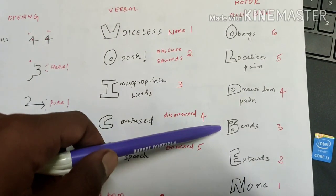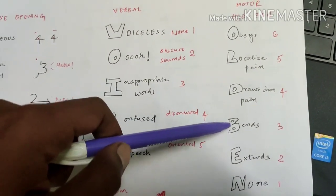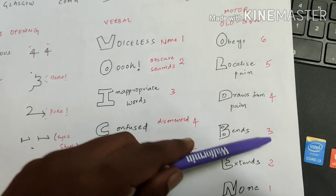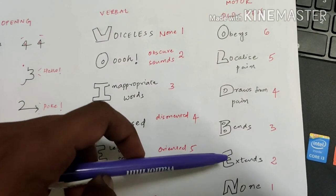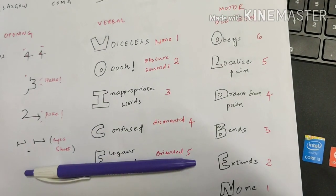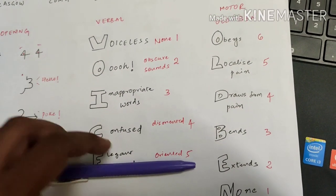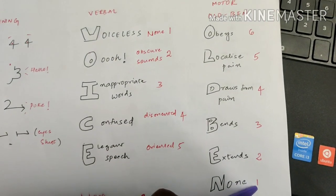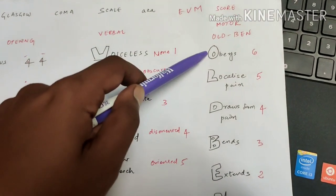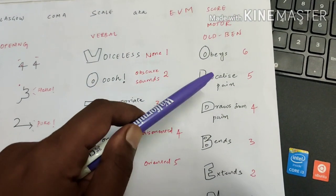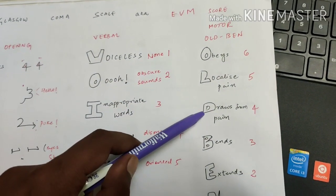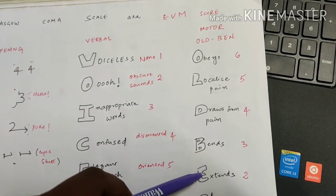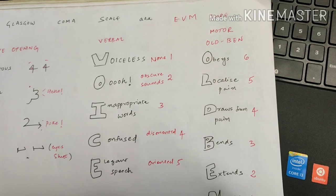Then B - OLD BEN, fourth letter is B. Bends means he'll flex, flexion attitude he'll show, then you will give three. E means extends - he'll show extension attitude, then you will do the score two. N shows you nothing - the score will be one. Easy to remember: OLD BEN. O obeys for six, L localizes pain for five, D draws from pain you'll get four, B bends he'll get three, E extends he'll get two, none you'll get one.